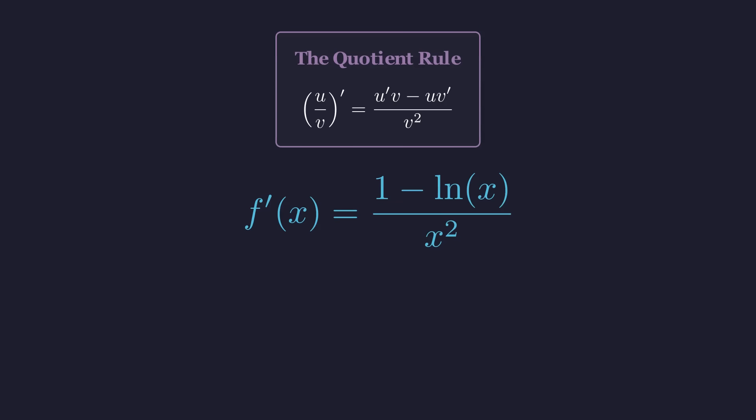Now, to find where the function has its maximum or minimum, its critical points, we set this derivative equal to 0. Now, for a fraction to be 0, its numerator has to be 0. The denominator x squared is always positive for positive x, so it's really the numerator we care about. So we need to solve this much simpler equation. Rearranging this equation is straightforward. We add the natural log of x to both sides. So the natural log of x equals 1.